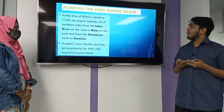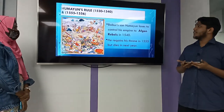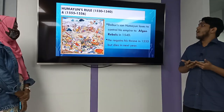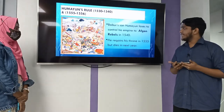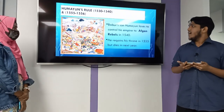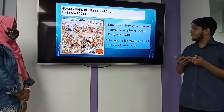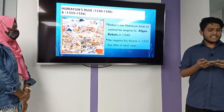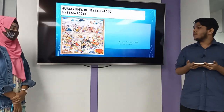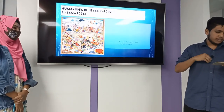After the death of Babur in 1530, his elder son Humayun came and ruled the Mughal empire. Babur's son Humayun lost control of his empire to Afghan rebels in 1540. He regained it in 1555, but in the next year he died. Thank you everyone. Now I would like to welcome my other group member, Saima, to continue the presentation.